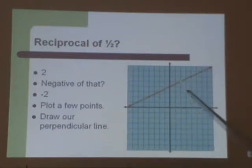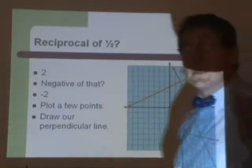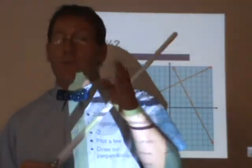Let's plot a few points. If we start at that point given, which was 2-5, the slope tells us to go down 2 over 1. We get a point right there. We go down 2 over 1 again, we get a point right there. Down 2 over 1, another point. So we can now draw a perpendicular line through those points, and look how nice and 90 degrees it is with our original line. The math works from a drawing perspective.